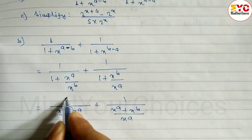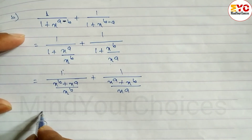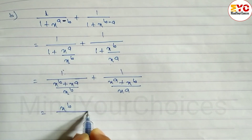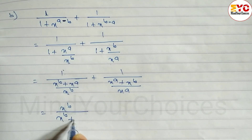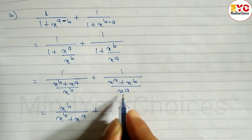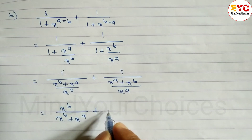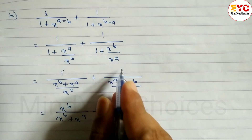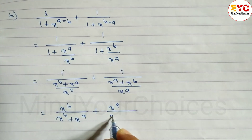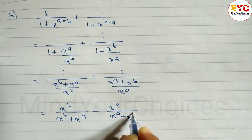So now we compute: x power B into 1 is x power B, divided by x power B plus x power A. And x power A multiplied by 1 is x power A. So in the numerator we get x power A plus x power B.